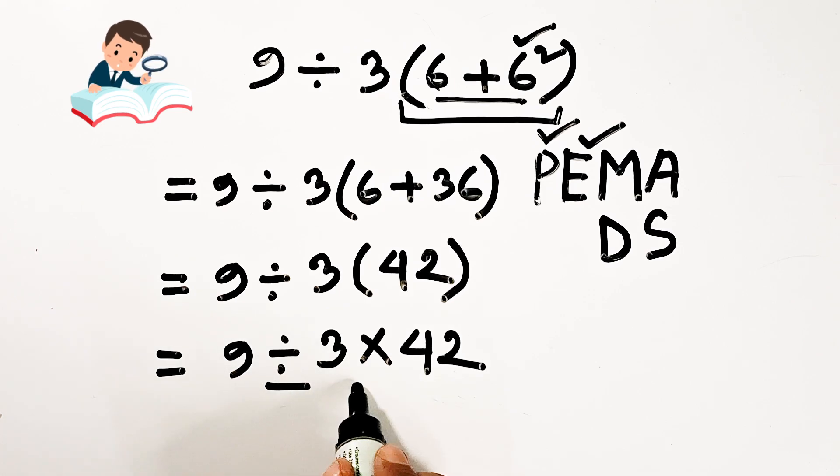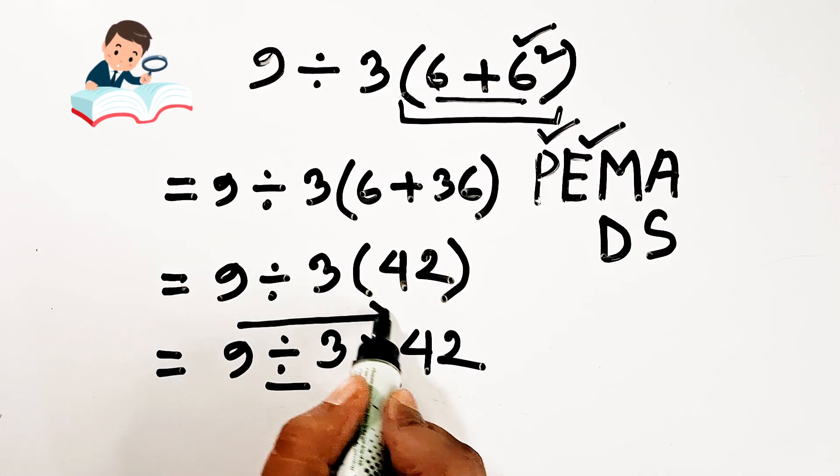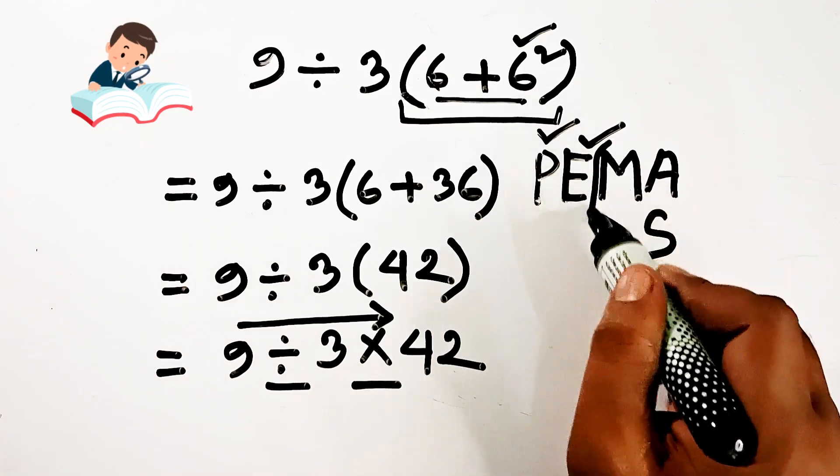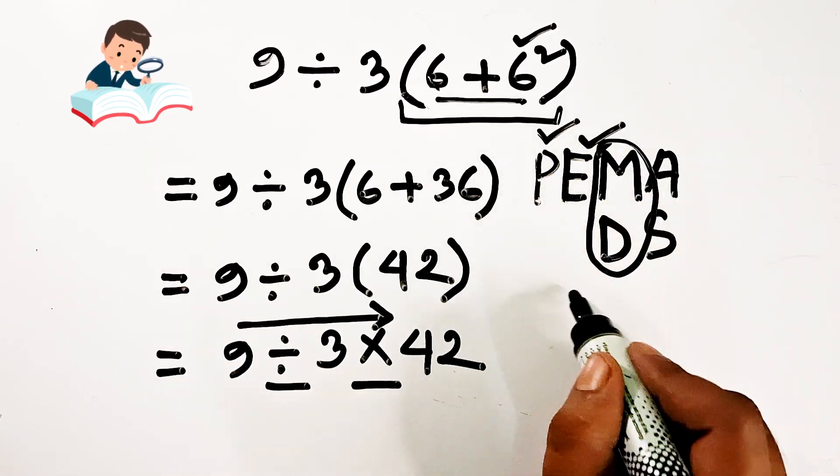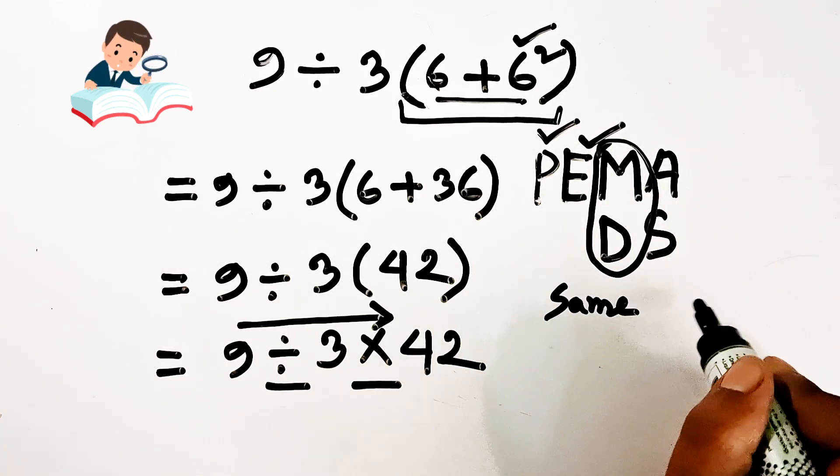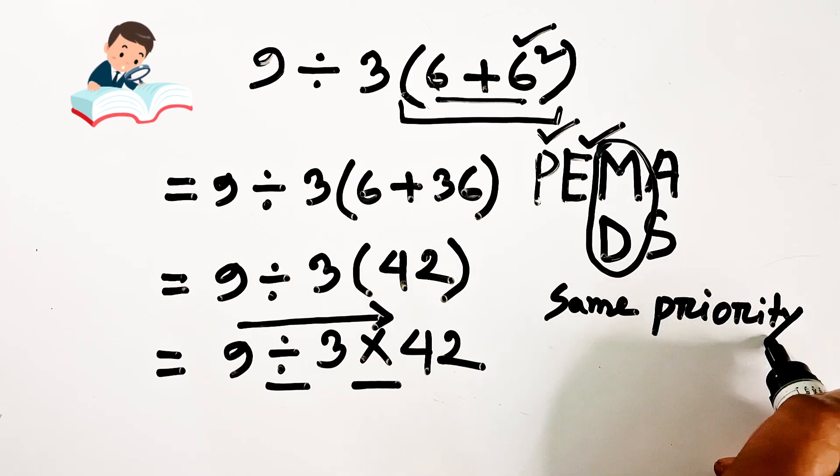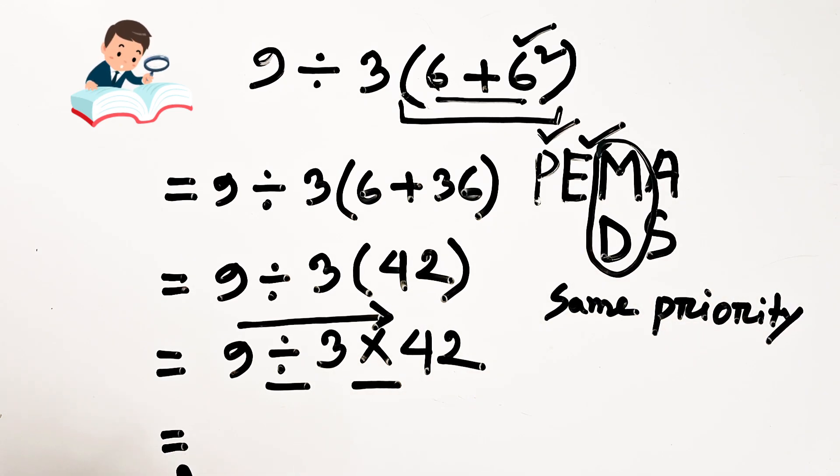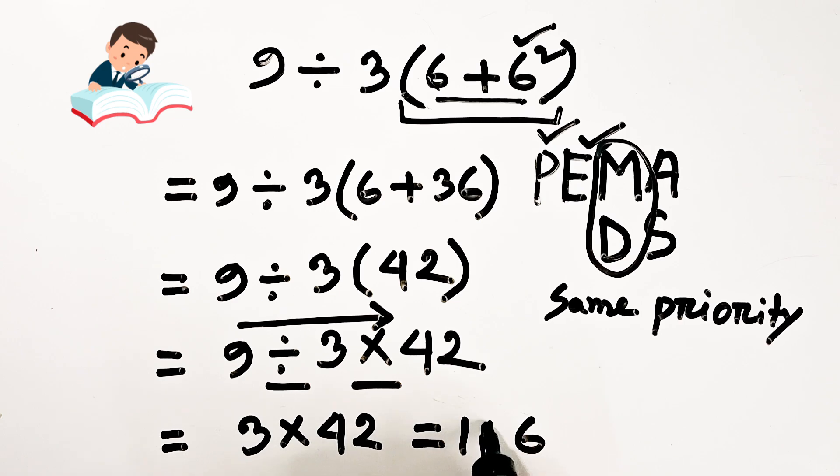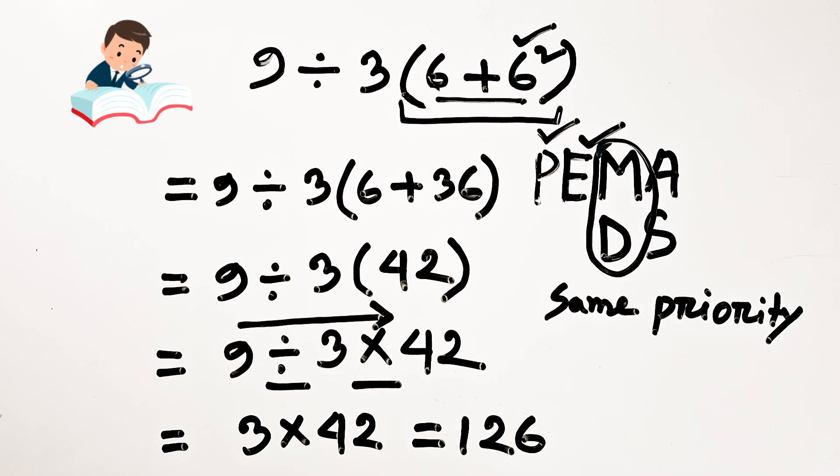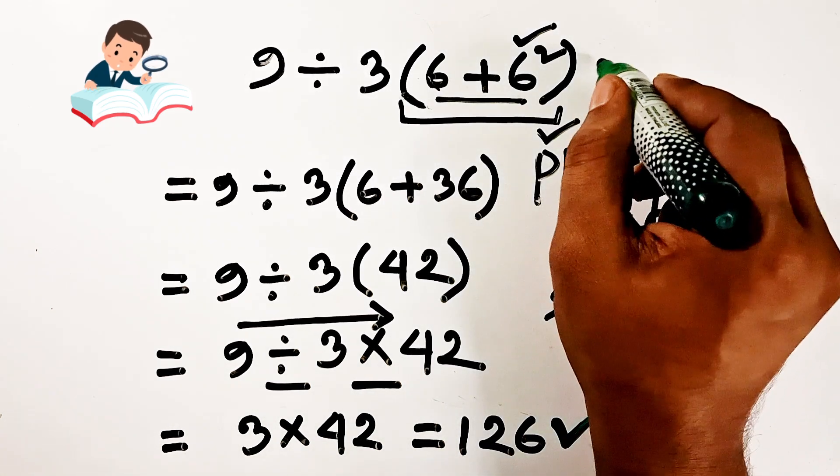According to the rule, we have to do from left to right of the expression because multiplication and division have the same priority. So whichever comes first, you have to go first. 9 divided by 3 is equal to 3, 3 into 42 is equal to 126. It is the right answer of the expression.